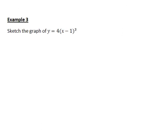Let's do one final example. Sketching the graph of y equals 4 times x minus 1 cubed. Same idea, y-intercept, first of all, is when x equals 0. That will give y equals 4 times 0 minus 1 cubed, giving negative 4.